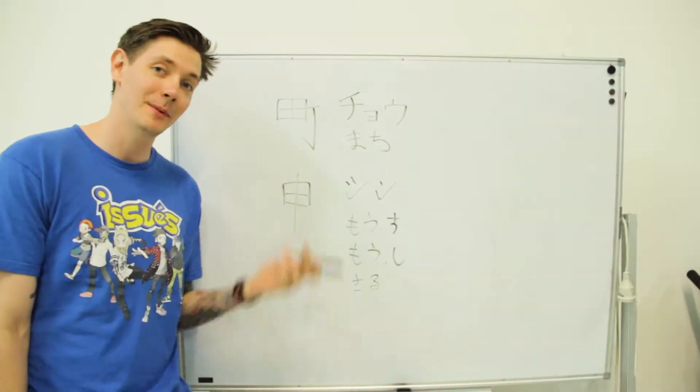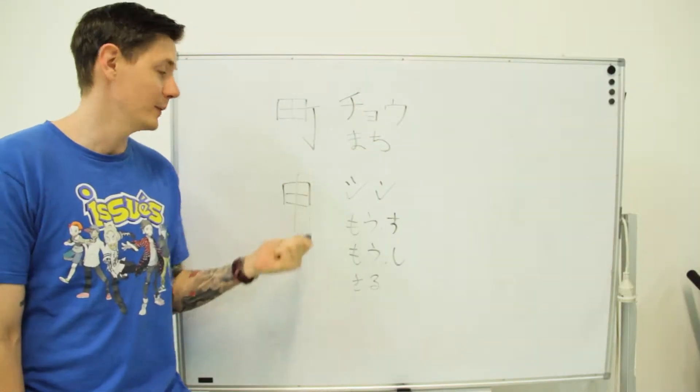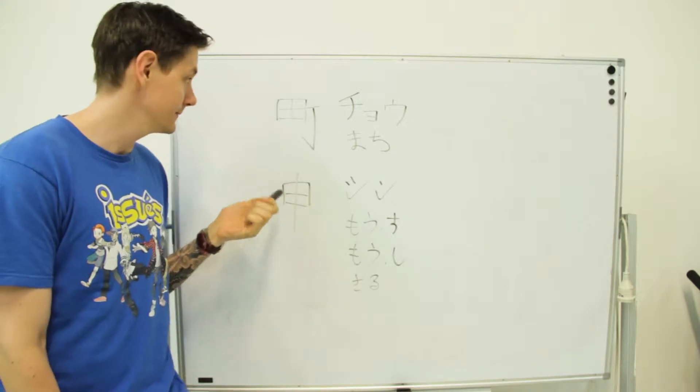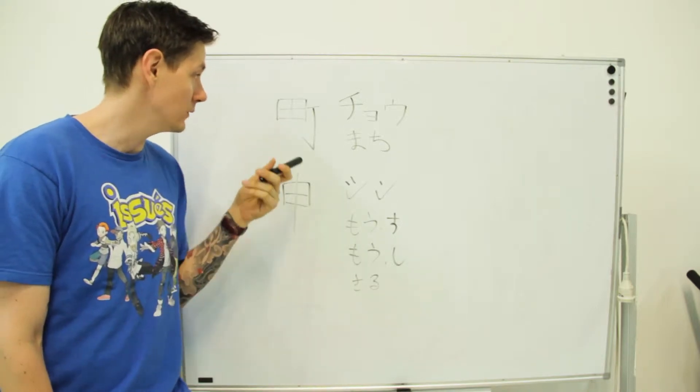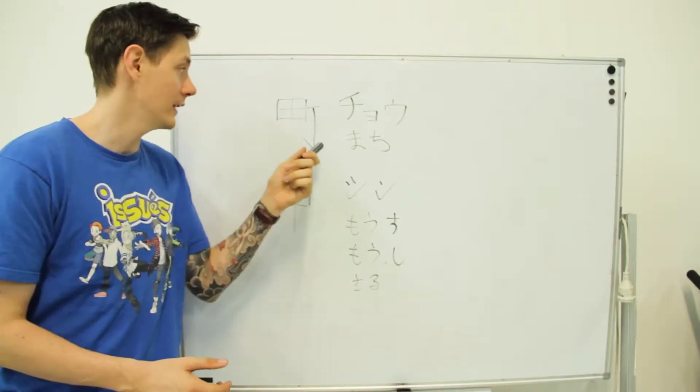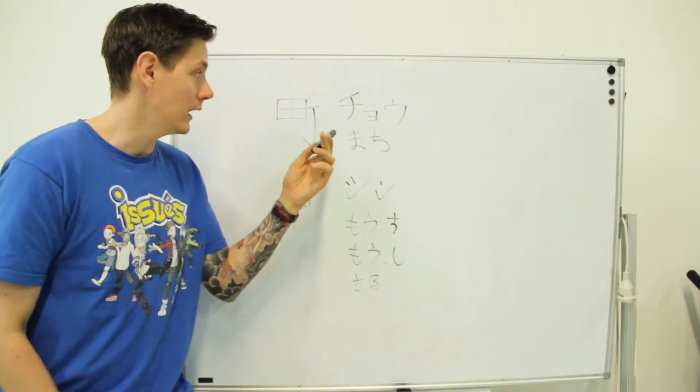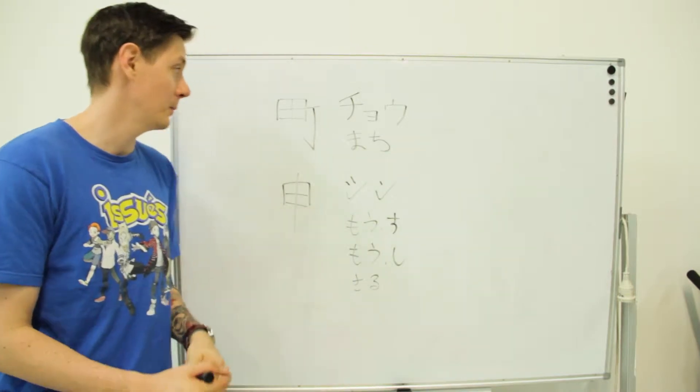Welcome back to Kanji Master. We're going to start today by looking at these two kanji, both of which contain the radical for rice field. The top one means town. It's basically two radicals, rice field and street together. Cho is the onyomi reading and machi is the kunyomi reading.